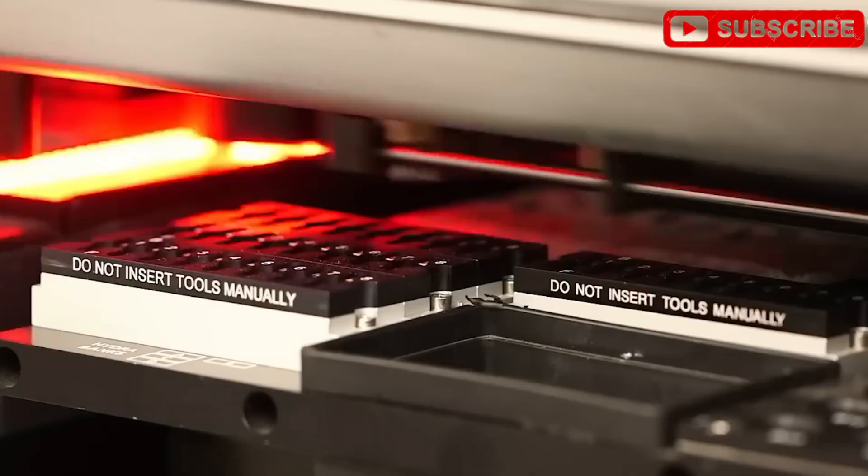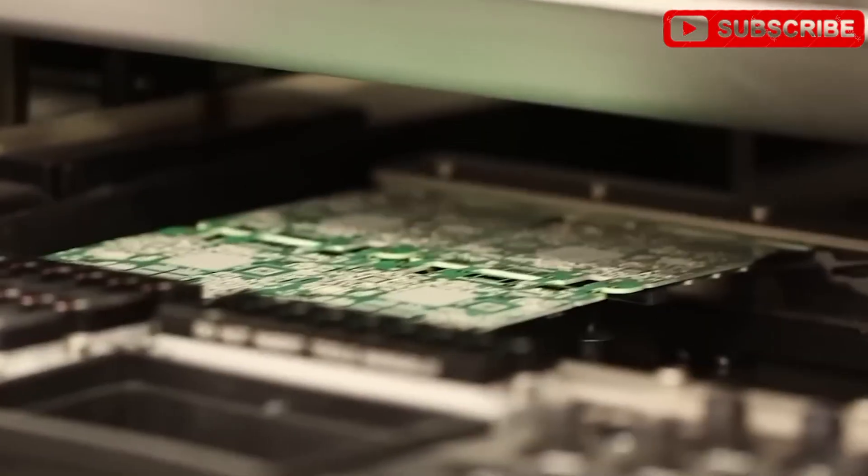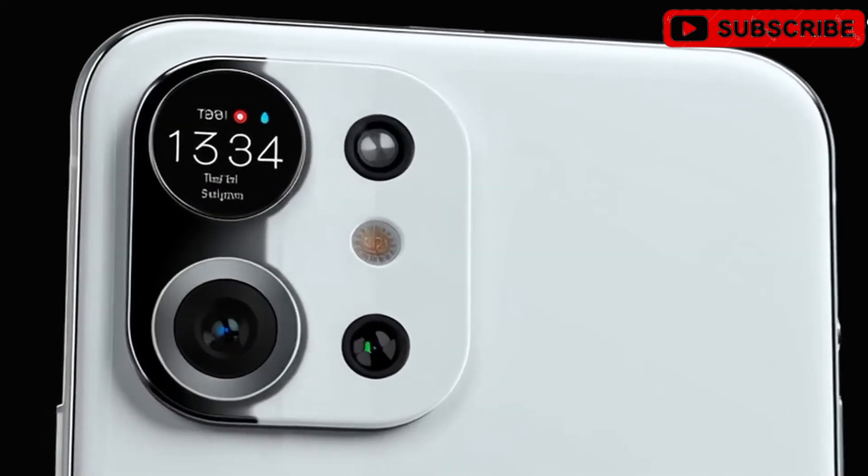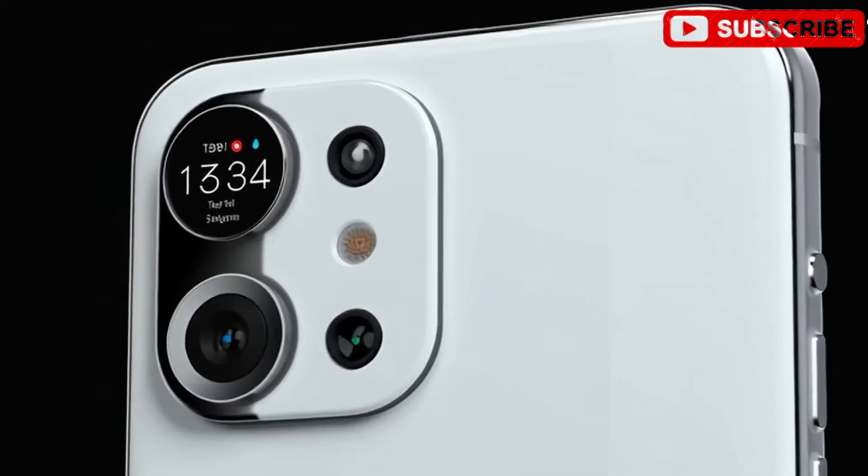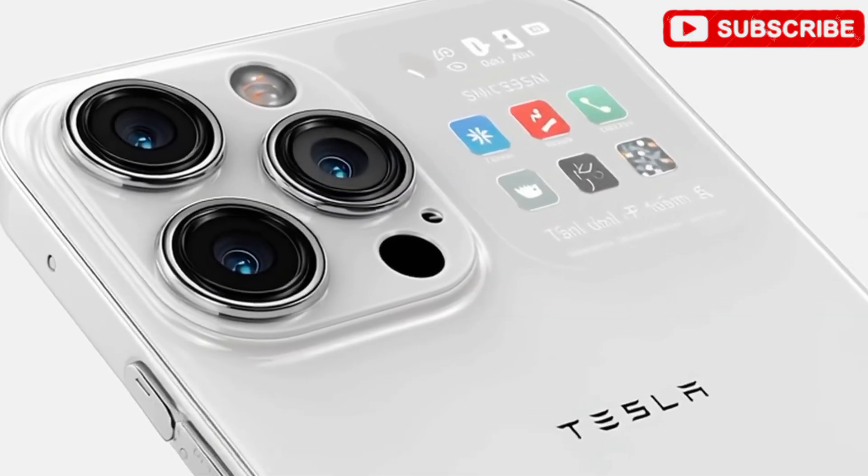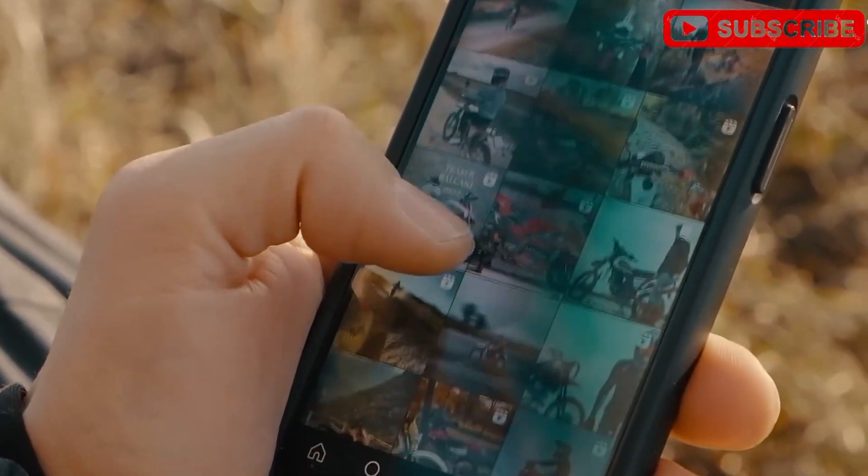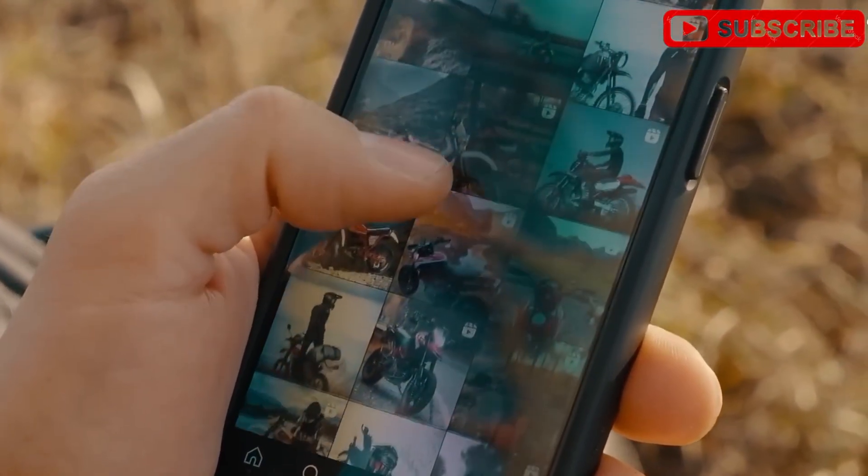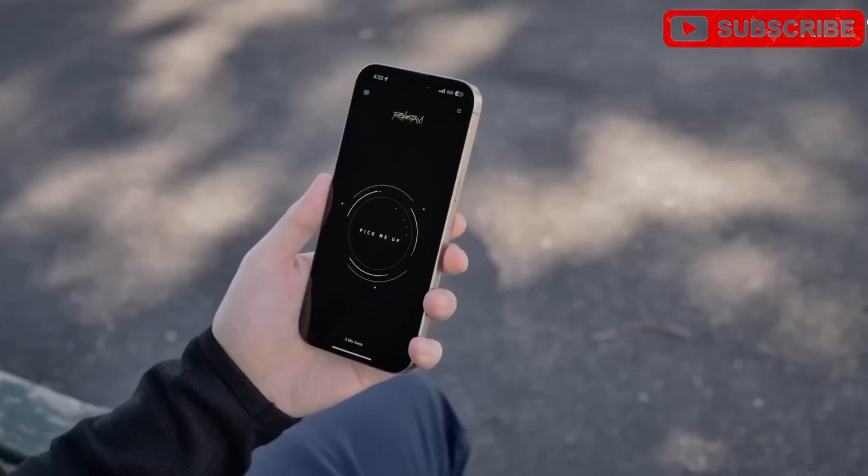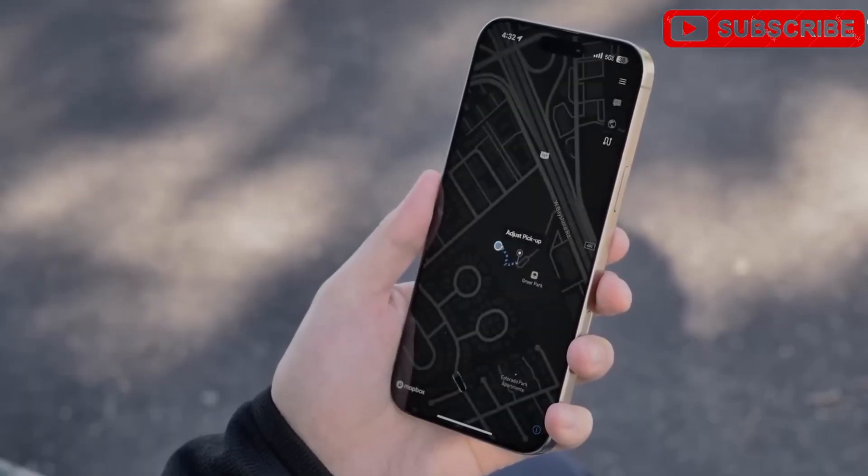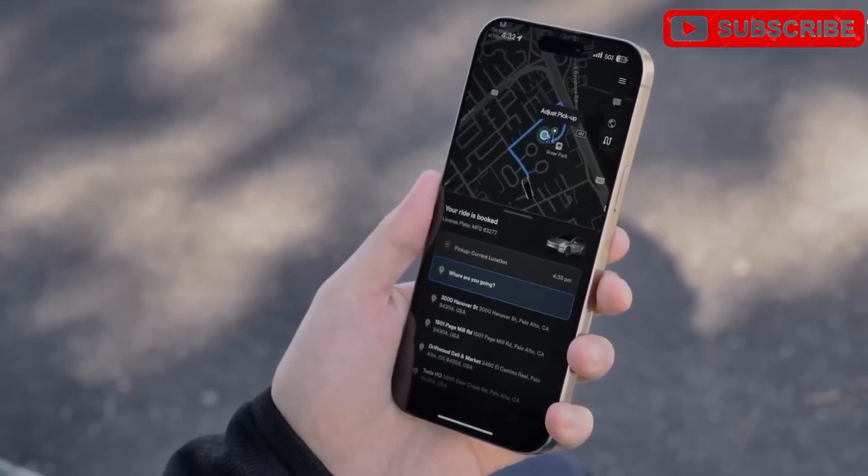Durability doesn't stop at the frame. The Tesla Pi phone boasts an IP69 rating, surpassing the iPhone's IP68. While an iPhone can handle submersion in 3 to 6 feet of water for 20 minutes, the Pi phone laughs off high-pressure, high-temperature water jets. Picture using it in a steam room or accidentally blasting it with a car wash hose. It'll keep ticking. This makes it ideal for extreme environments, from construction sites to mountain trails.